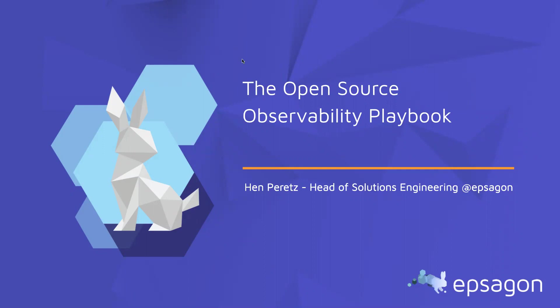Thanks, Jerry. Hello everyone. So let me do a quick introduction about myself. I'm Hen Peretz, running the solutions engineering team at Epsilon. At Epsilon, we are building a monitoring solution for modern applications, whether it's microservices or serverless — everything that is basically distributed. Our tool gives the ability to seamlessly add tracing, logging, and correlate between metrics — what we call full observability for modern applications.